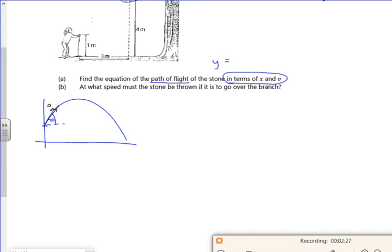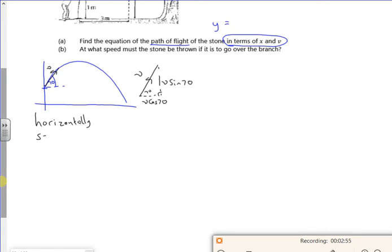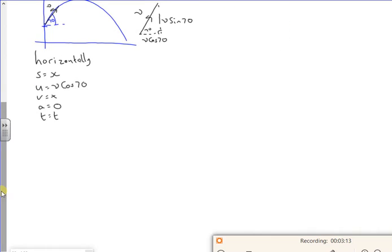So let's have a think horizontally. Do you remember I do my little velocity vector? So I've got V there, 70. So I've got V cos 70, V sine 70. And that's pretty much all I've got. Horizontally, S is going to be X. U is going to be V cos 70, which isn't a nice number, so I'm going to leave it like that. A is 0. T is T.